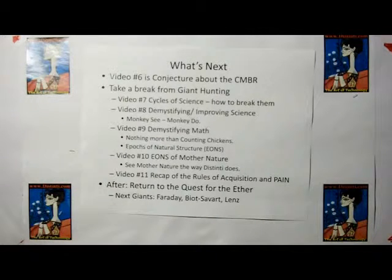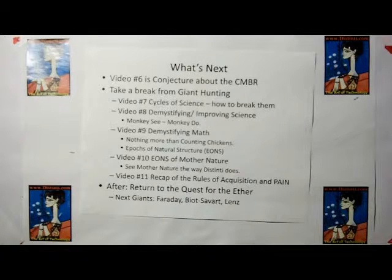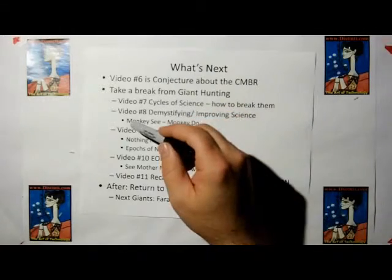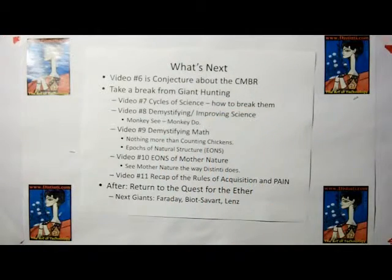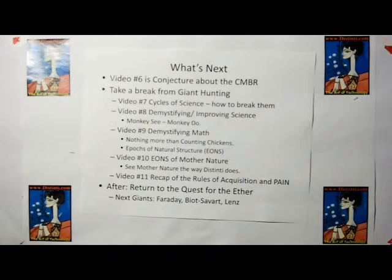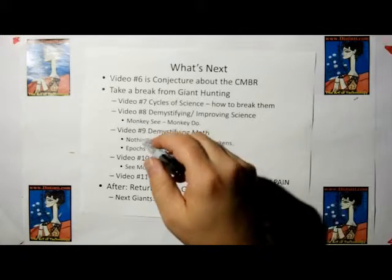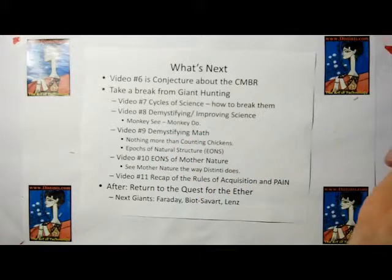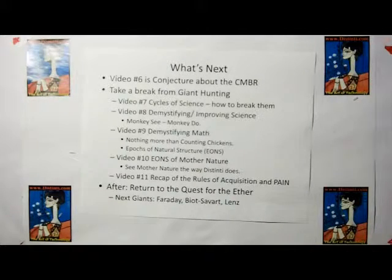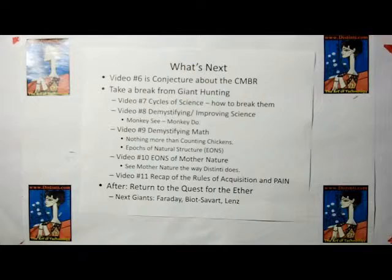So what's next? Video number six is going to be conjecture about the cosmic microwave background radiation. It's not my real answer, which will be in a much later video, but it's just for fun. We're going to take a break from giant hunting. I made the argument that we're doing things in science backwards, and the next videos are going to show you where we're doing things backwards and how to correct them so we can improve science and go forward. Pretty much, I'm going to show you that we have to break away from this monkey-see-monkey-do physics that we've been doing for the past hundred years. That's in video number eight. Now I'm going to demystify math. We have a problem that scientists think that if they derive something it must be true, and I'm going to show you that's not true. Math is nothing more than our ability to count chickens, and its sole purpose is to mimic nature. Nature is not obliged to follow math. After video 11, we're going to return to the quest for the ether.